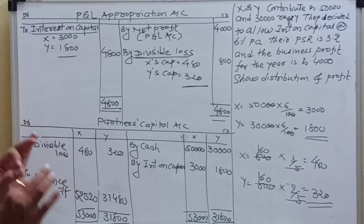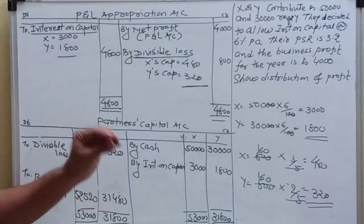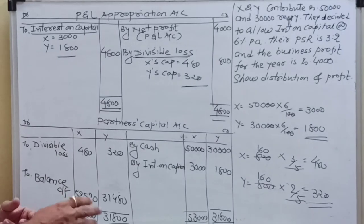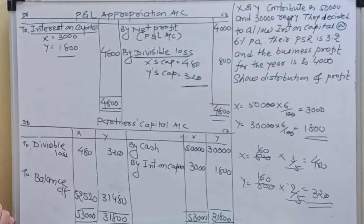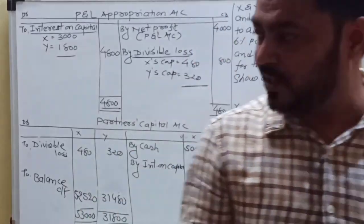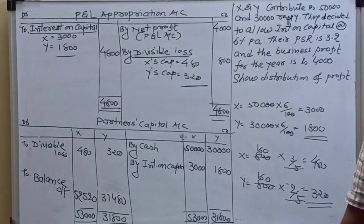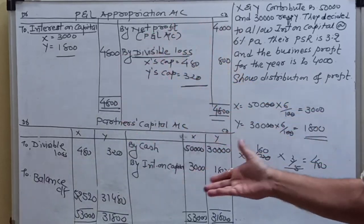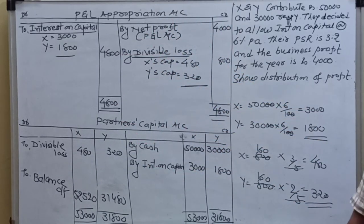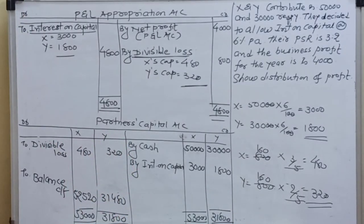So this is how we have to prepare the accounts. We have taken only a simple example to make you understand how to give effect. Debit goes to credit and credit goes to debit, and we find the total and carry forward to the balance sheet. Slowly and gradually we will do more and more examples in the next lecture. Thank you.